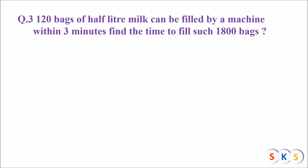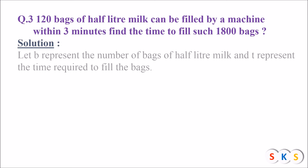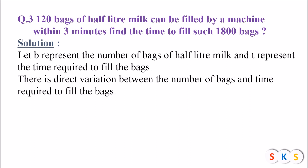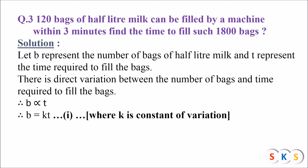So there is a direct variation between number of bags and time taken to fill the bags. Suppose b represents the number of bags and t represents the time taken by the machine. There is a direct variation because if the number of bags increases, time will also increase, so b is directly proportional to t. The rule of direct variation says the ratio of those two quantities is constant, so b = kt.